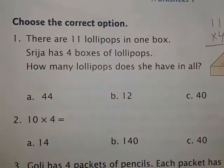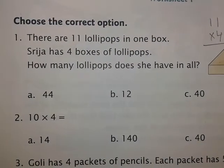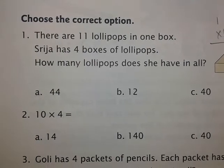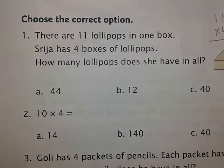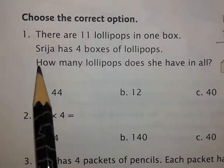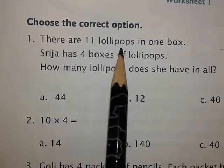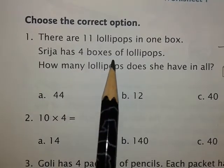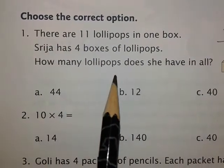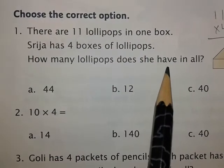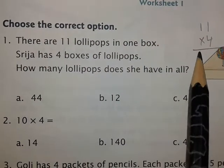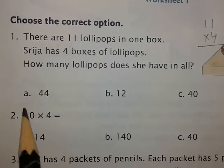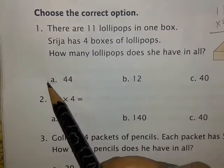This page was your homework — worksheet one from your workbook. The first question was: there are eleven lollipops in one box, and Sreeja has four boxes of lollipops. How many lollipops does she have in all? As I told you last day, you can multiply even if you don't know the tables.